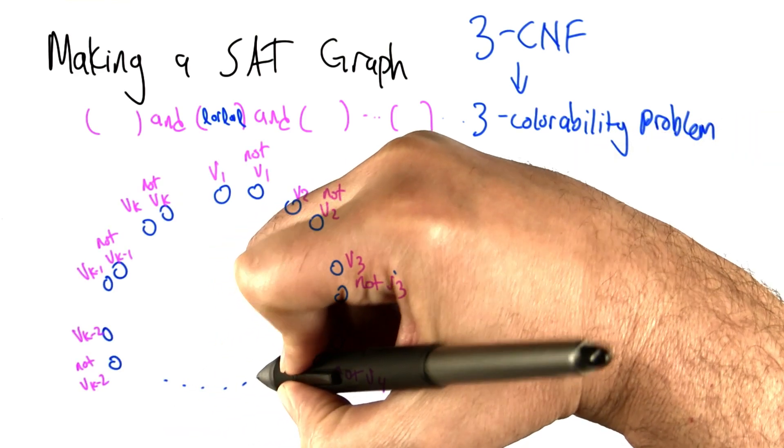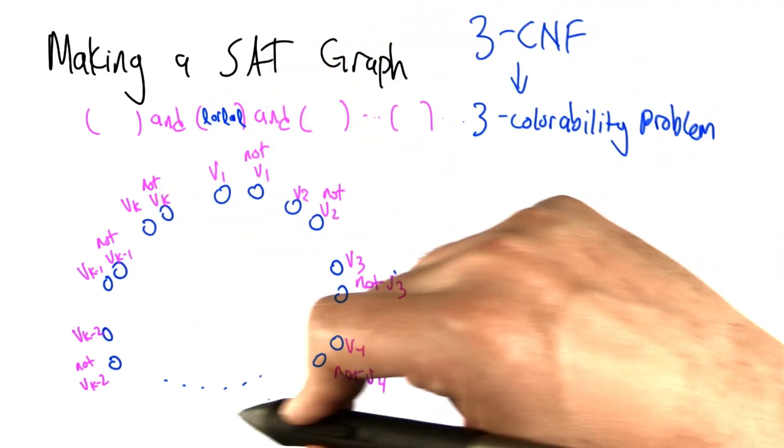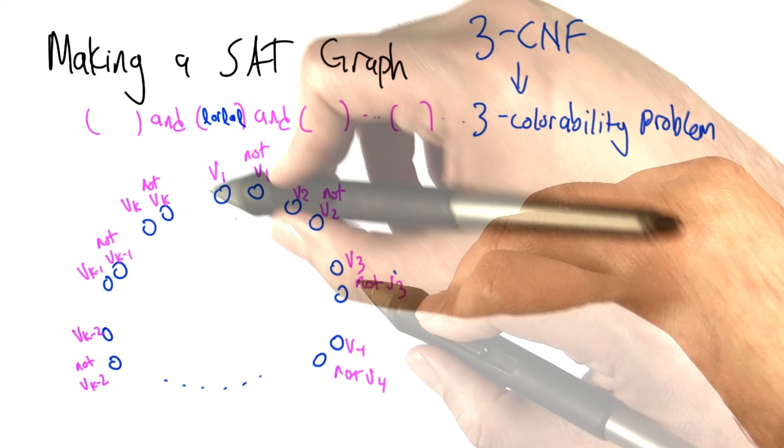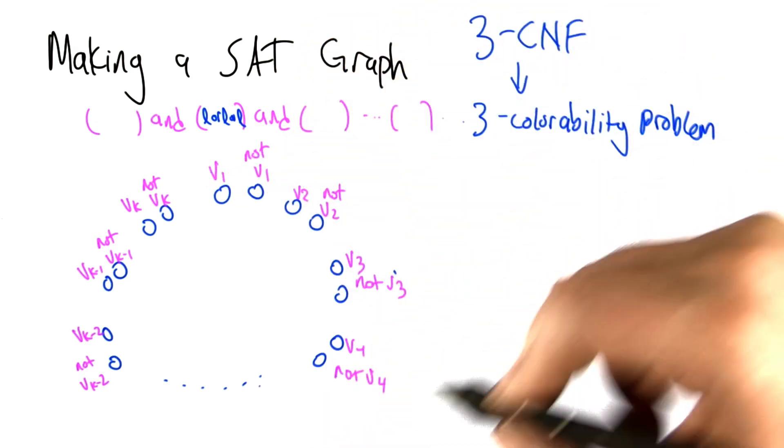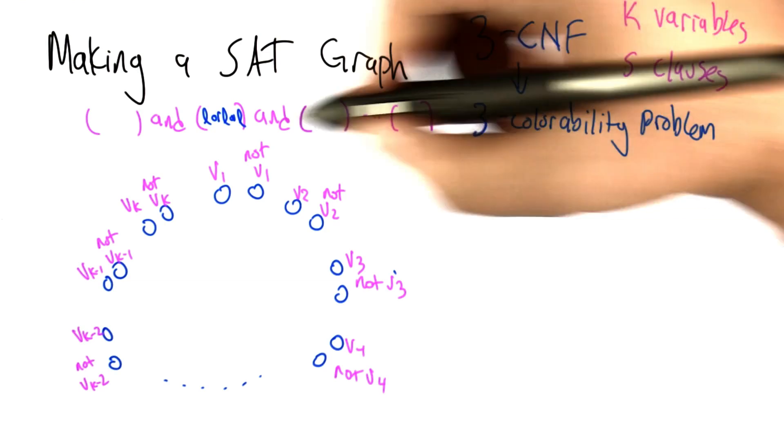What we're going to be doing is building a graph. We'll start off by creating some nodes with one node for every possible literal in the formula. So that's the k different variables. Let's say, just to be concrete, this formula that we have has k variables and s clauses.